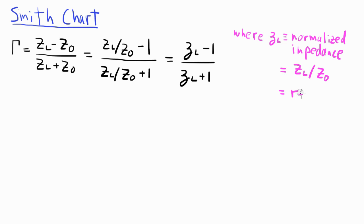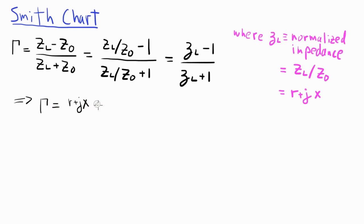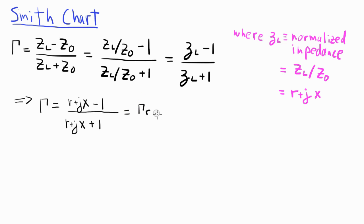We can write the normalized impedance as a real part r and an imaginary part jx. Then gamma can be written as r plus jx minus 1, divided by r plus jx plus 1, and that equals gamma_r, the real part of gamma, plus j times gamma_i, the imaginary part of gamma.